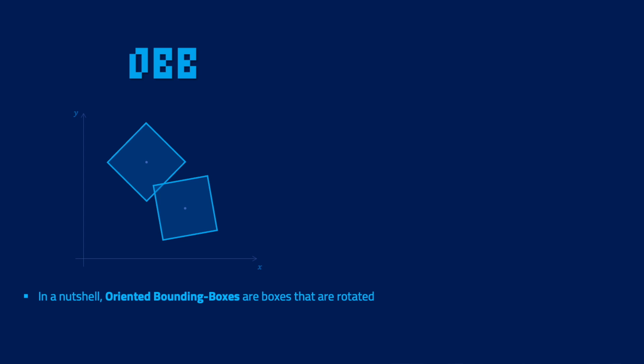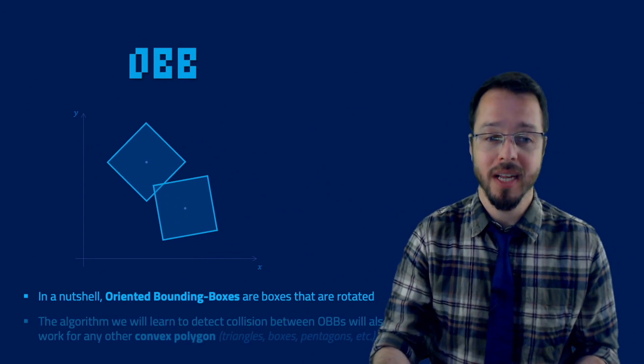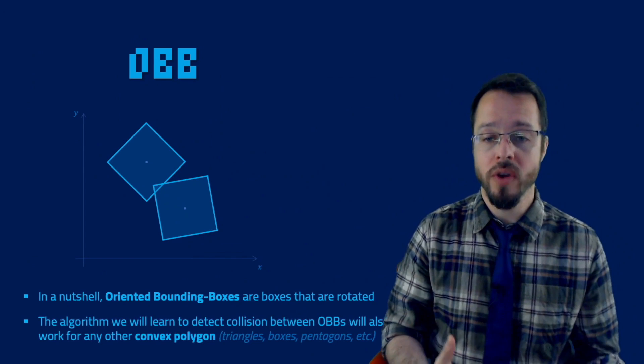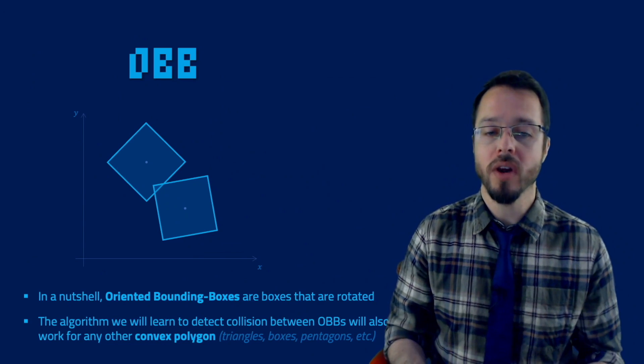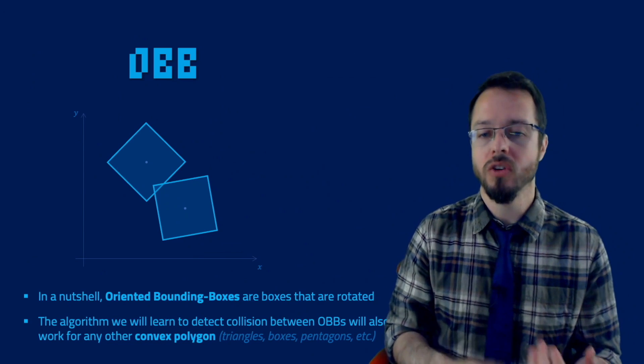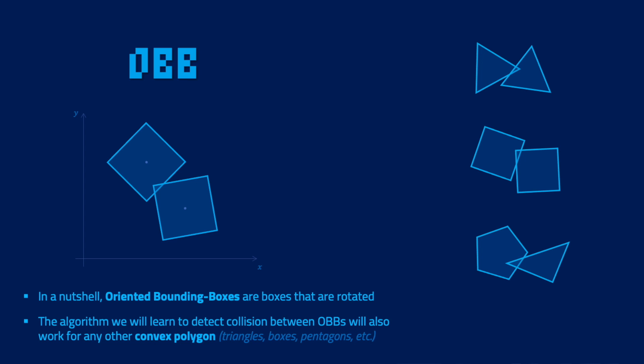If you ever read in a physics book or a 2D physics engine source code someone called OBB, they are talking about Oriented Bounding Boxes. Also, the SAT algorithm we're going to learn to detect collision between Oriented Bounding Boxes will also work for any other type of convex polygon. So the algorithm doesn't work only for boxes — it works for triangles, boxes, pentagons, hexagons, heptagons, you get the idea.